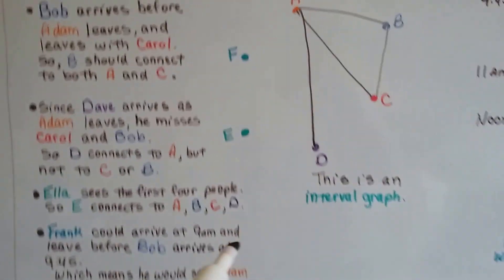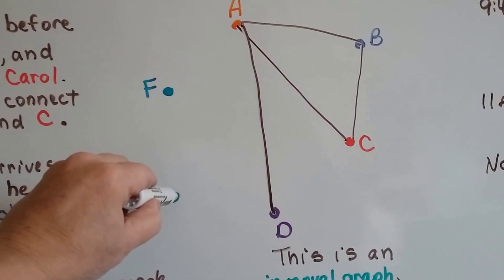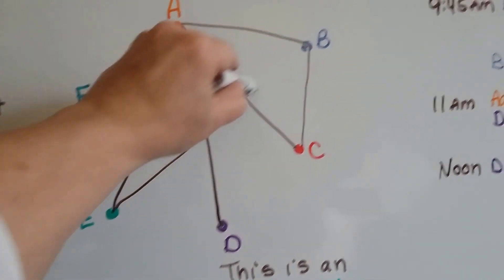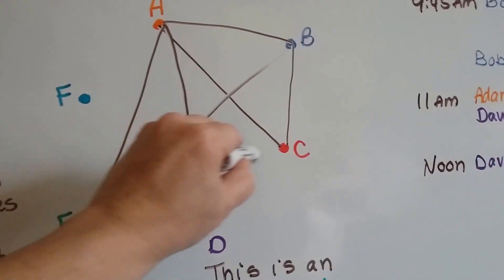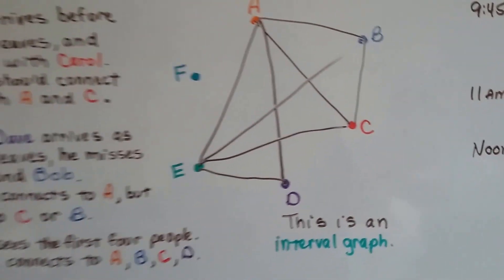She connects to all four of these. So E is going to connect to A, B, C, and D.